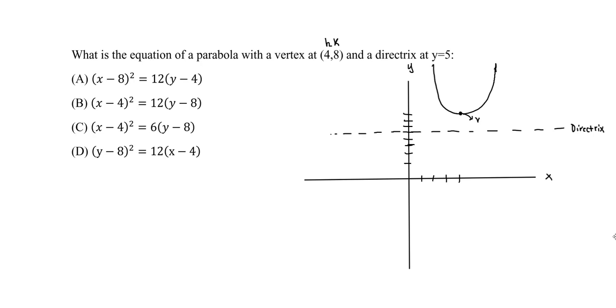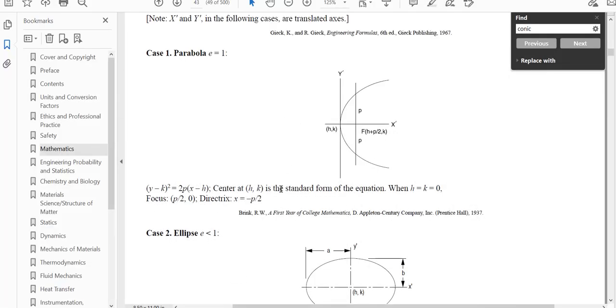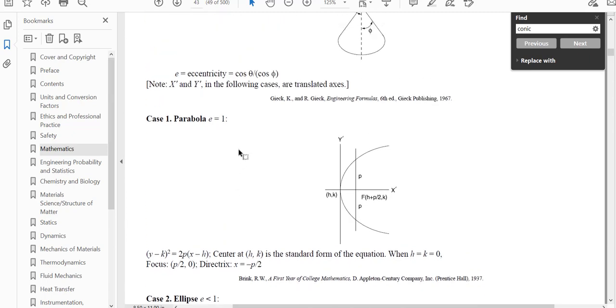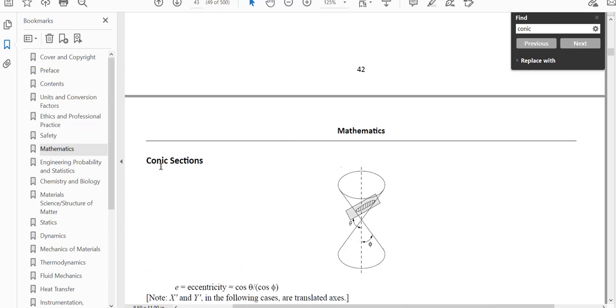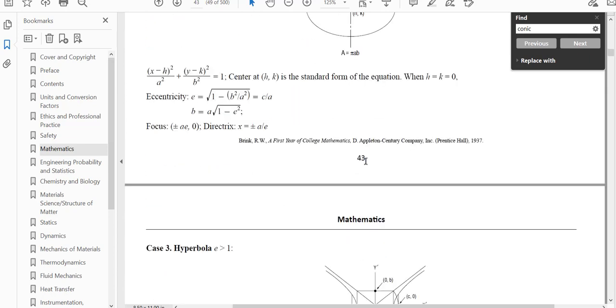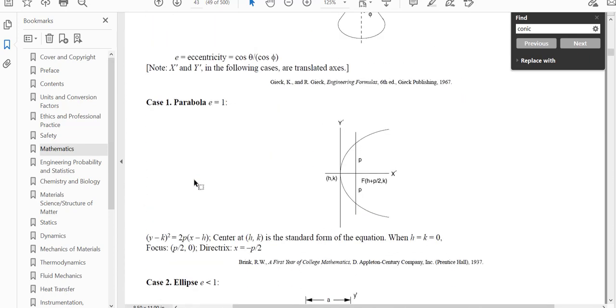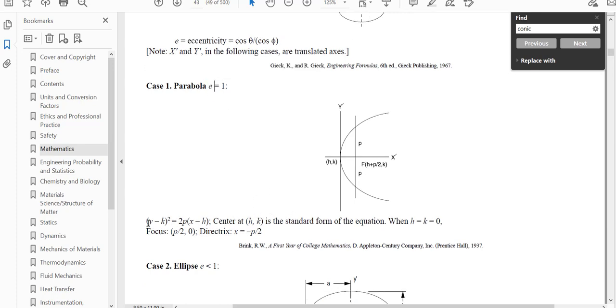And we know our directrix is at y equals 5. We have our vertex at the point 4, 8. And at the end of the day, we want to find the equation of a parabola. So what do we do first? First, I recommend we look in the FE handbook and look at the equation for a parabola. So we know this is in the new FE handbook. It's under conic sections. You can go down on page 43. And for a parabola, the eccentricity value is 1. So we don't need that at this point.